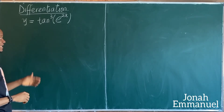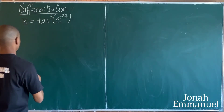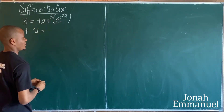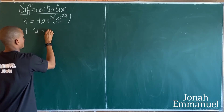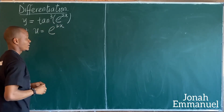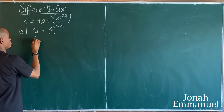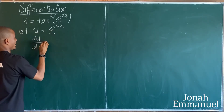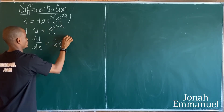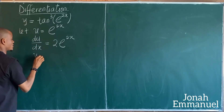I'm asked to differentiate this. Case one: I will let u be equal to the term in the bracket. The term in the bracket is exponential 2x. If I differentiate u with respect to x, I get du/dx is equal to 2 exponential 2x.